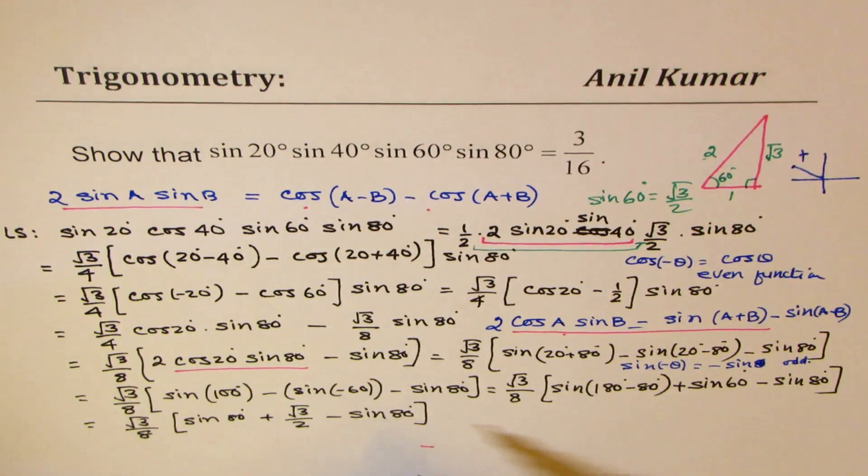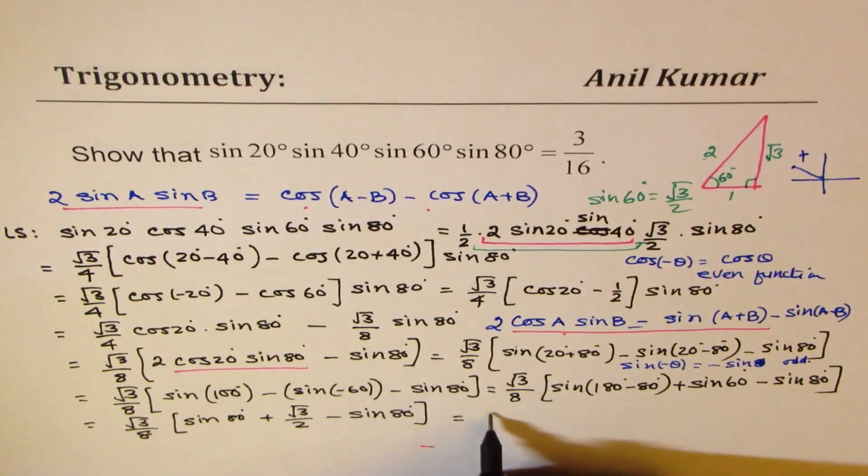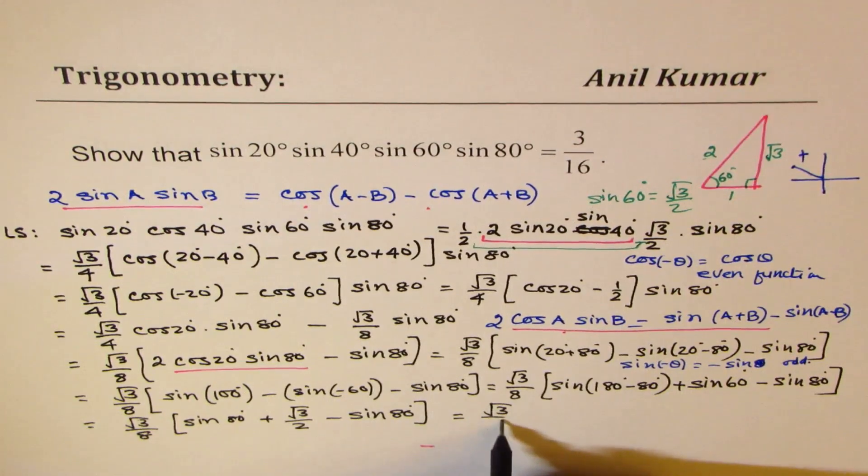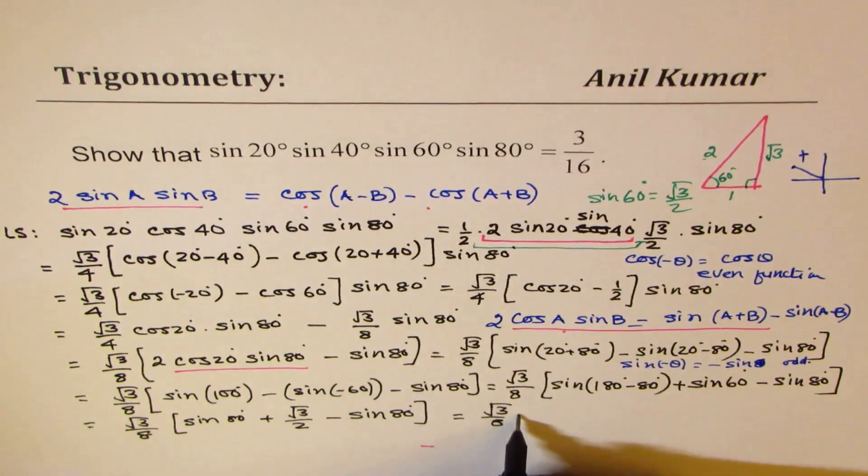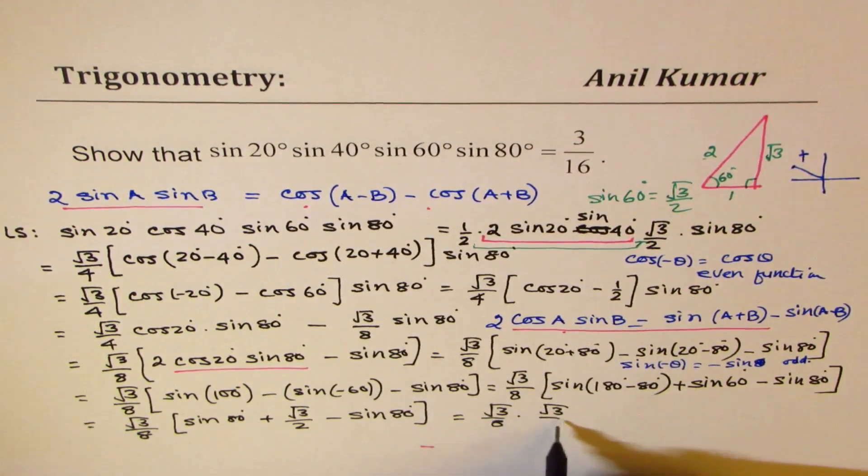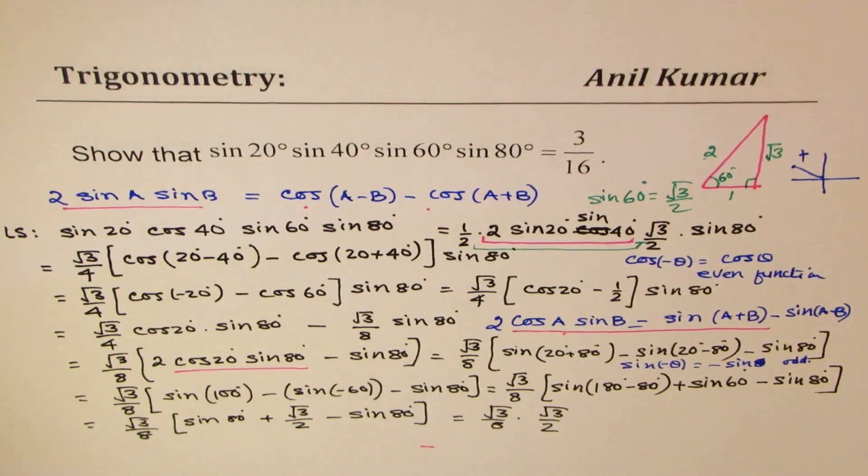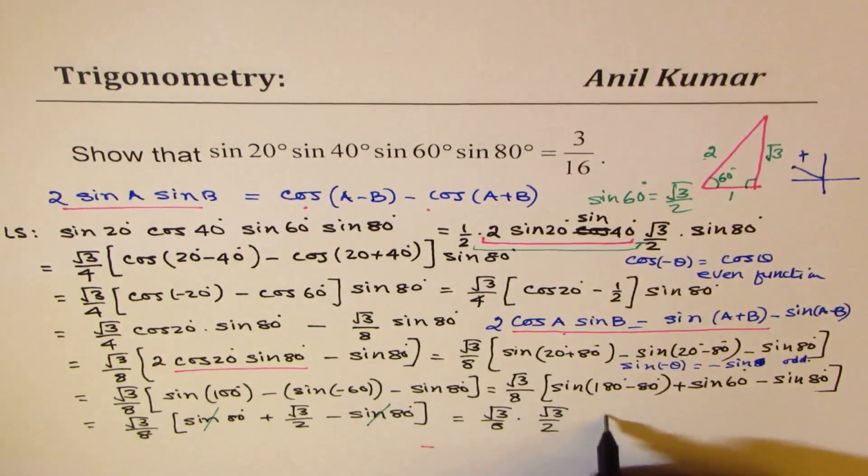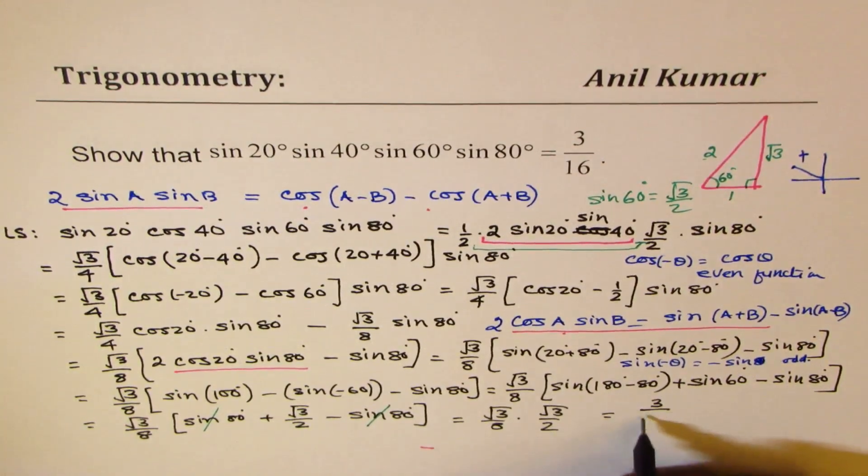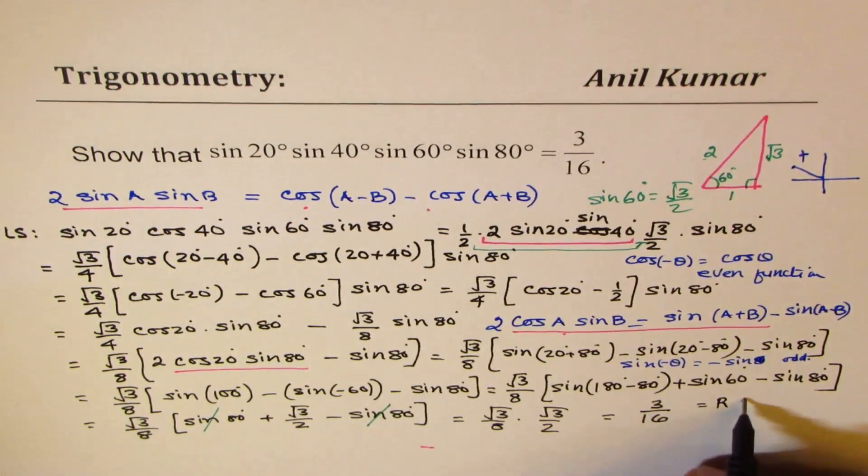Perfect. Sin 80 minus sin 80 is 0. So we're left with √3 over 8. And when you open the bracket, times √3 over 2, since you can see that these two cancel off. So that gives you 3 over 16, which is the right side.